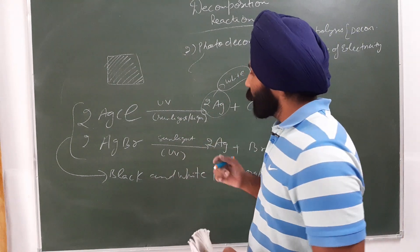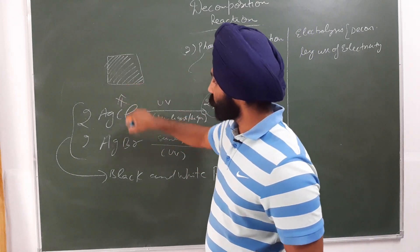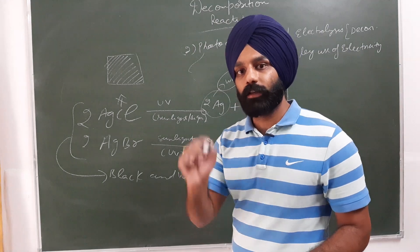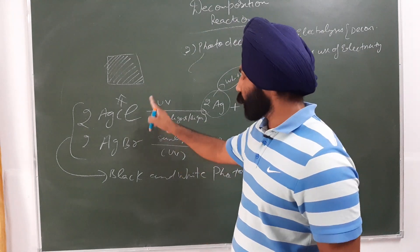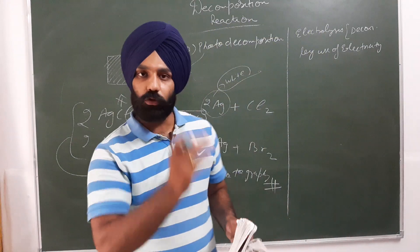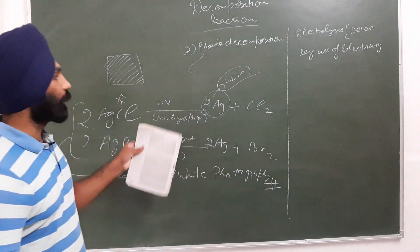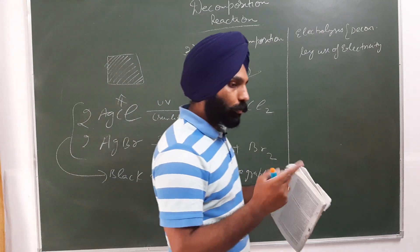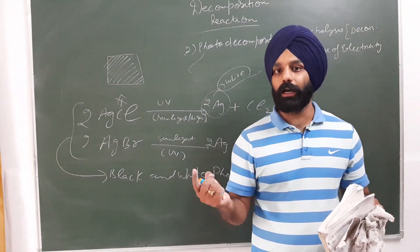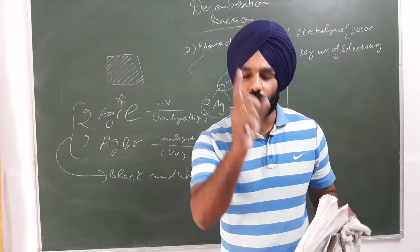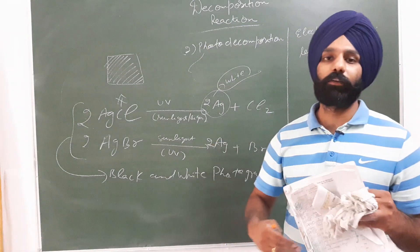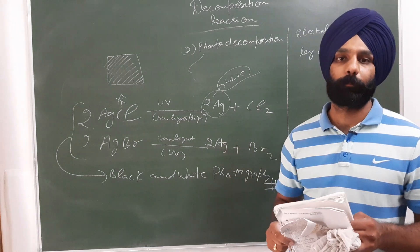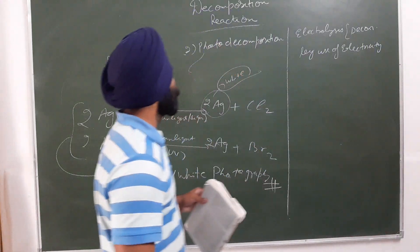One important question: can we store silver chloride or silver bromide in a transparent glass container? No, because they get photo-decomposed by light. That is why we store silver chloride and silver bromide in dark containers — so that light does not reach them and they do not get photo-decomposed.